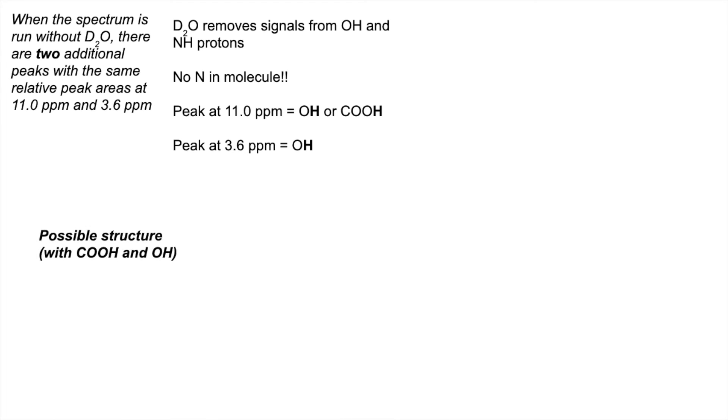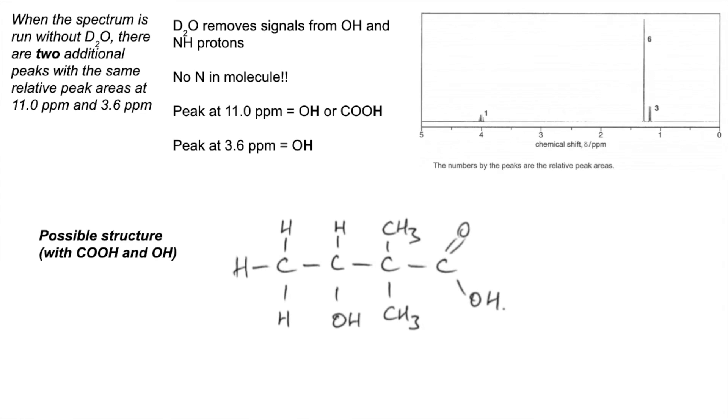So one possible structure. There's a few answers to this. So the one I've gone for has a COOH in it and an OH, and that gets us the three O's that we need. So here's what I've come up with. So I'll just run through the peaks very quickly. So the peak at delta 4 ppm is that single hydrogen, that one there, adjacent to the CH3, split into a quartet.